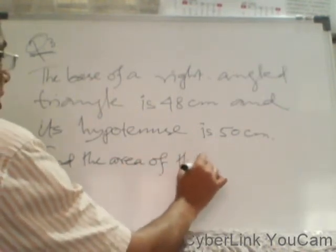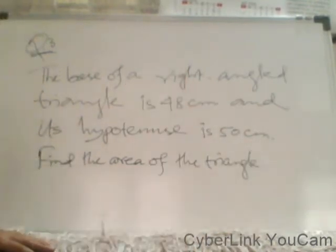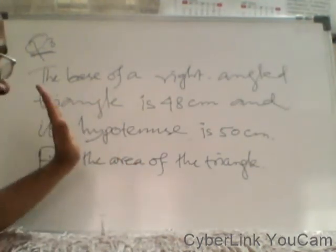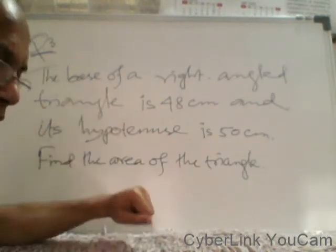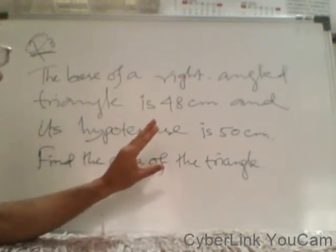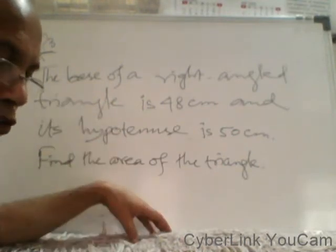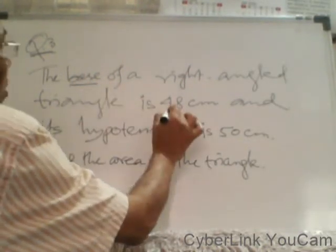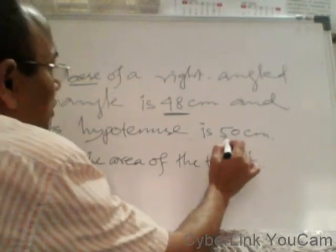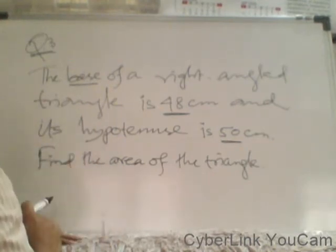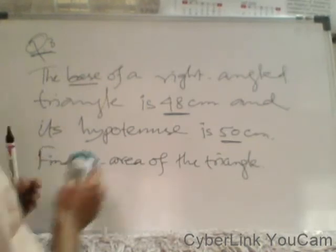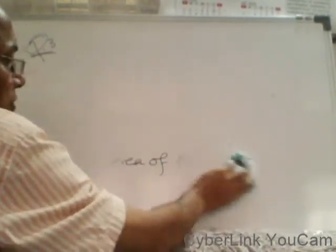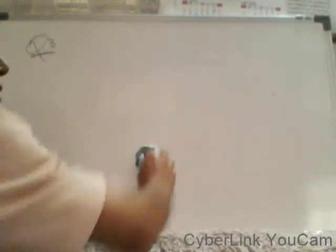Before starting the sum, read the question. First learn how to apply Heron's Formula — fine. Second, the sums are set in a little different way. When you see this question, the base is given: base of a right-angled triangle is 48 cm, and hypotenuse is 50 cm. Find the area. Drawing a figure will be helpful here.